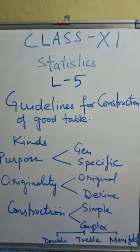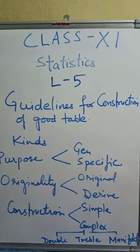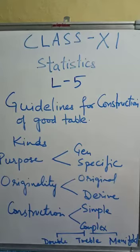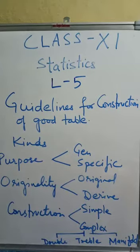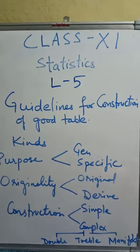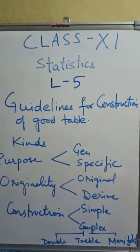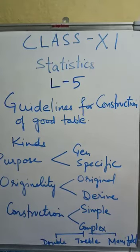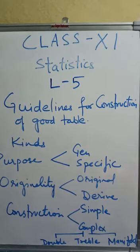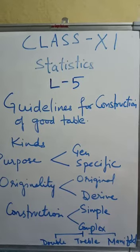In purpose, there are two types: general and specific. General purpose table is a table which is of general use. It does not serve any specific purpose or specific problem under consideration. Whereas specific purpose table is prepared with some specific purpose in mind. These tables are known as summary tables, whereas general purpose tables are known as reference tables.